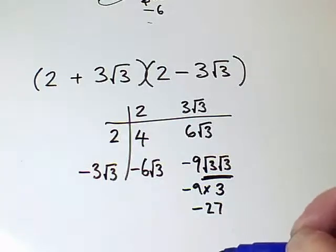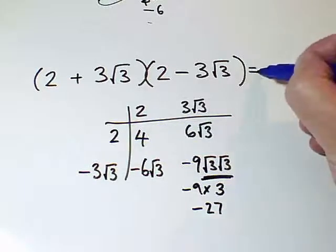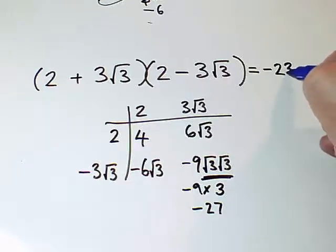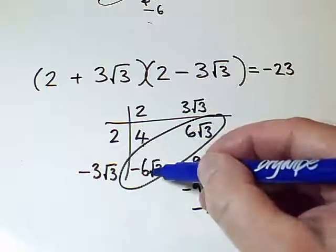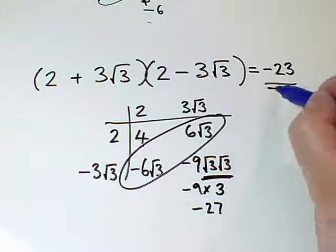And then when I come to simplify, I've got two number terms, so 4 and minus 27 multiply to give minus 23. But these two terms are identical but with a sign swap, so they cancel each other out, and so the answer just is minus 23.